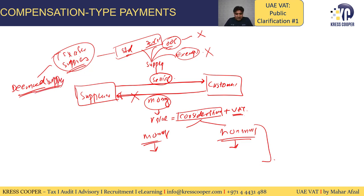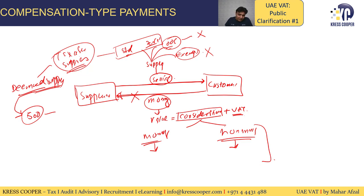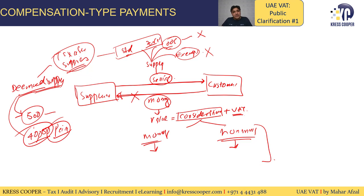The law allows that up to 500 per person in the preceding 12 months, goods or services can be given free of cost. Any amount beyond this will be considered a deemed supply and will be subject to tax. At the company level, the total value is 40,000 per annum in the preceding 12 months. Any amount the company supplies beyond 40,000 during this period will be subject to tax.